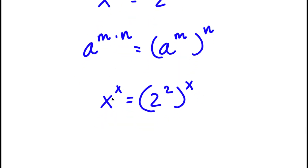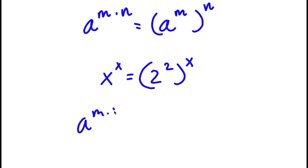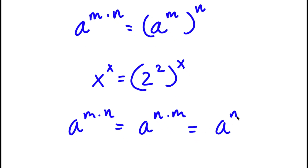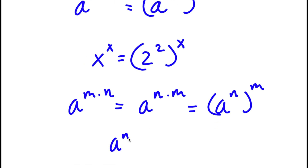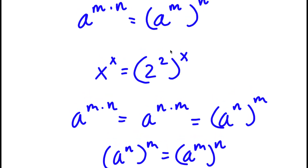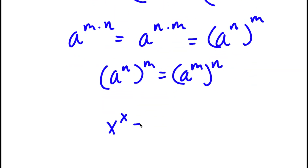Now, a to the power of m times n is also equal to a to the power of n times m — we can switch the order. So if a to the power of m to the power of n equals a to the power of n to the power of m, then 2 to the power of 2 to the power of x is the same thing as 2 to the power of x to the power of 2. So now x to the power of x equals 2 to the power of x to the power of 2.